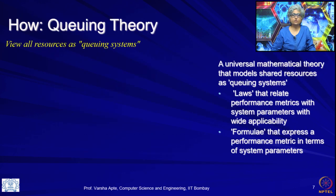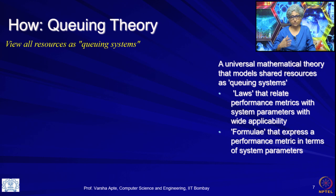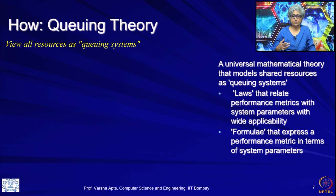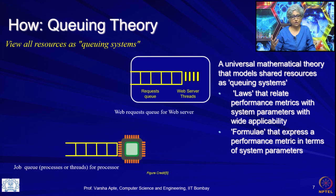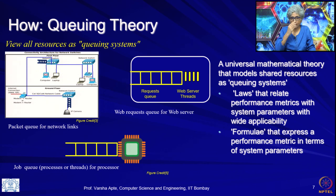How do we answer it? We use the theory of queuing systems, or in short, queuing theory. Queuing theory views everything as queuing systems. It is a universal mathematical theory that models resources as queuing systems — thinking of everything as something that users have to stand in a queue for. The users can be packets or something similar. Everything — web servers, cores, all network elements — everything is queues. It gives us a set of laws that relate performance metrics to system parameters, and formulae by which these estimates can be done.